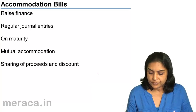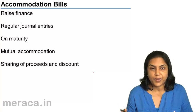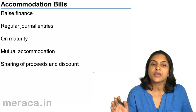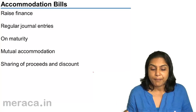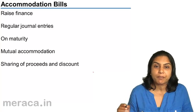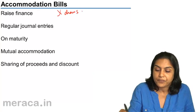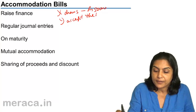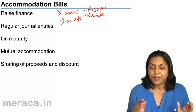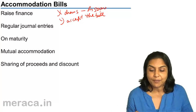Now suppose X needs money. X does not sell goods to Y, but X is in need of money and Y is a good friend of X. So X might request Y to accept a bill which he draws. X draws a bill for Rs. 50,000 and asks Y to accept it. So there is a bill for Rs. 50,000 — no sale transaction — drawn by X and accepted by Y.